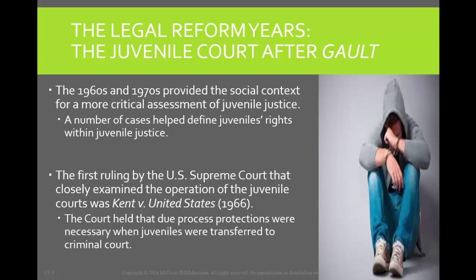Within a year of the Kent decision, the United States Supreme Court heard the landmark case In re Gault in 1967, which gave juveniles a number of due process protections for those staying within the juvenile system. These protections included the right against self-incrimination, the right to adequate notice of charges brought against them, the right to confront and cross-examine their accusers, the right to assistance of counsel, and the right to sworn testimony and further appeal.